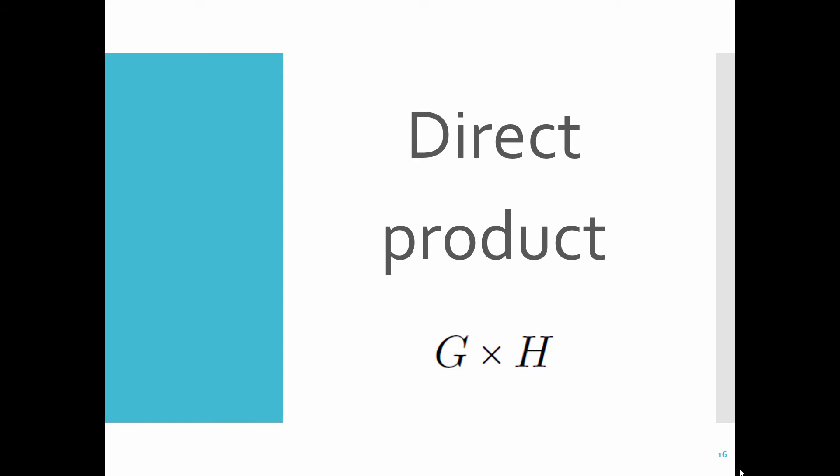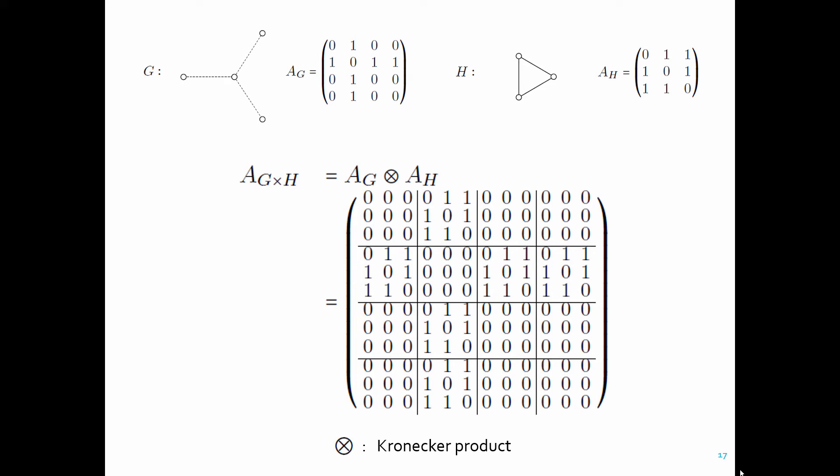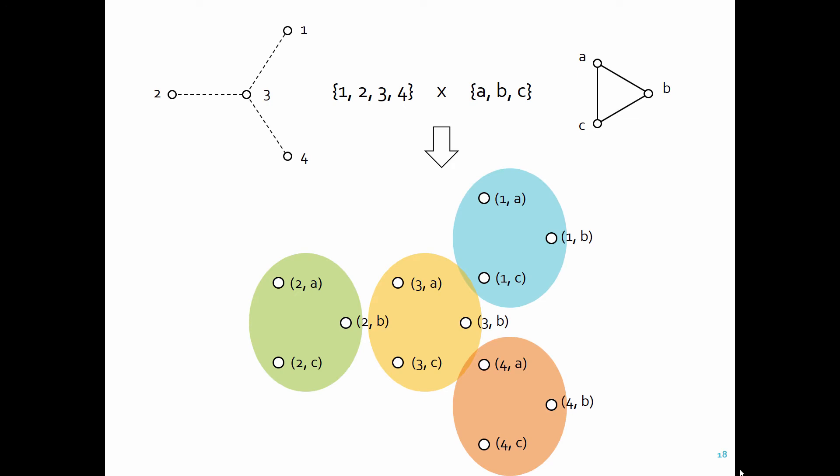The second example of graph product operations is the direct product, also known as tensor product. In this case, you calculate the Kronecker product of the adjacency matrices of the two-factor networks, and then use it as the supra-adjacency matrix of the resulting graph product. This means that two metanodes in the product are connected, if and only if their component nodes are connected in both factor networks.